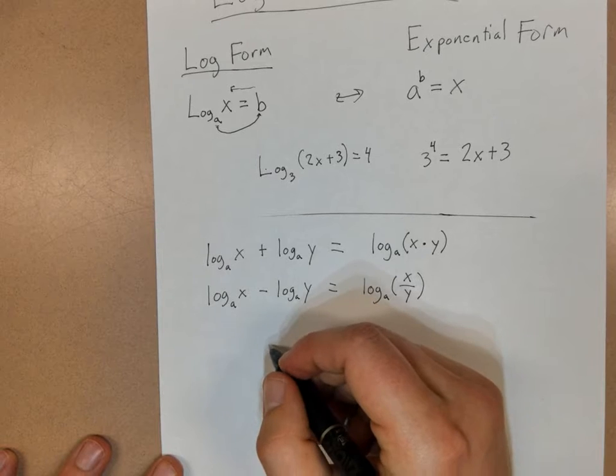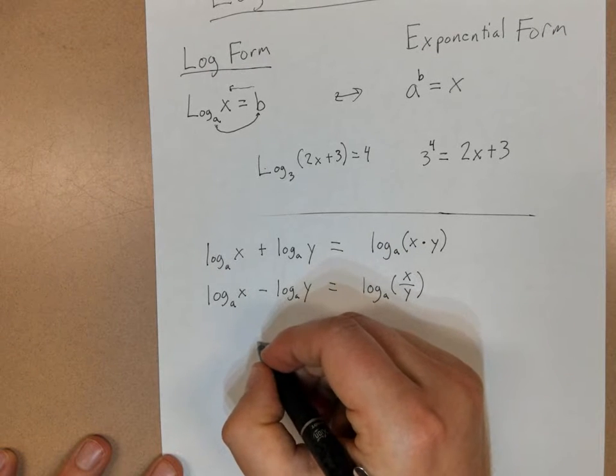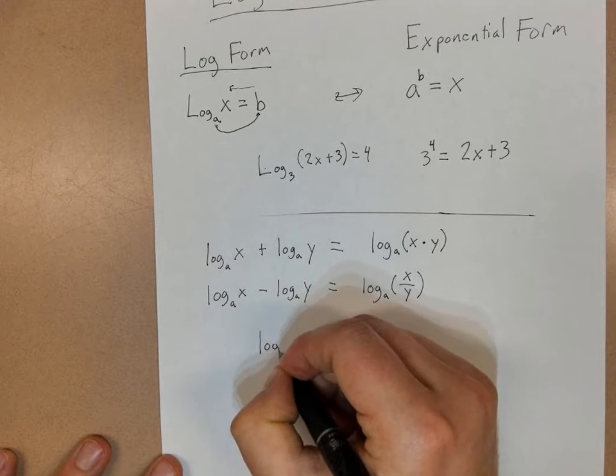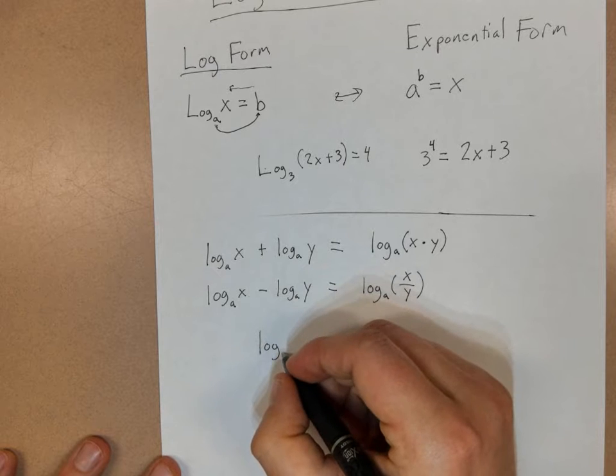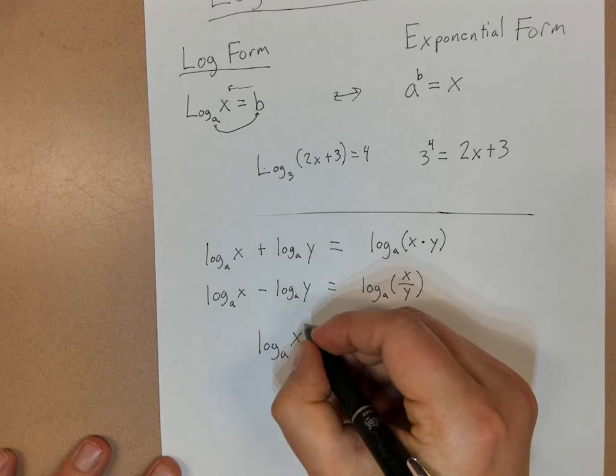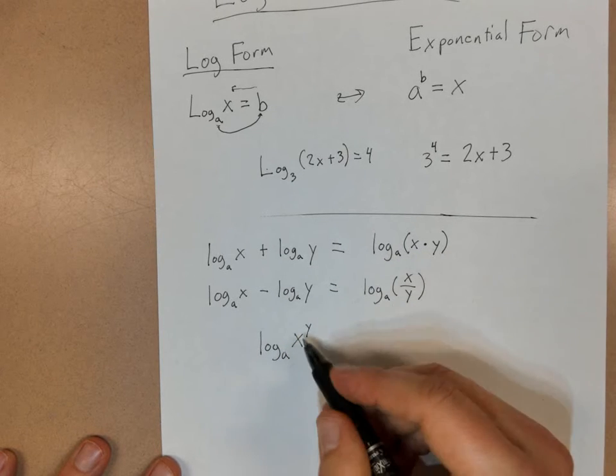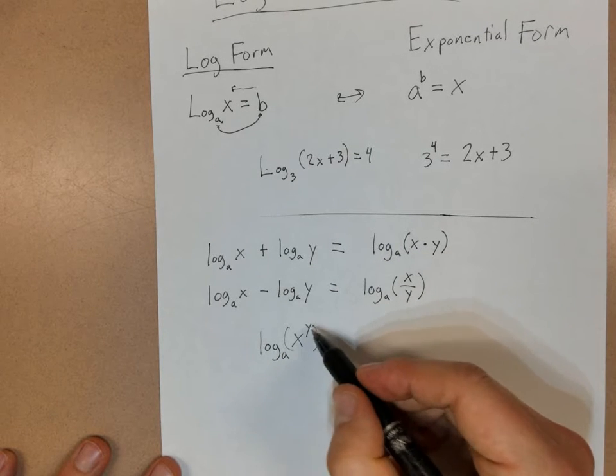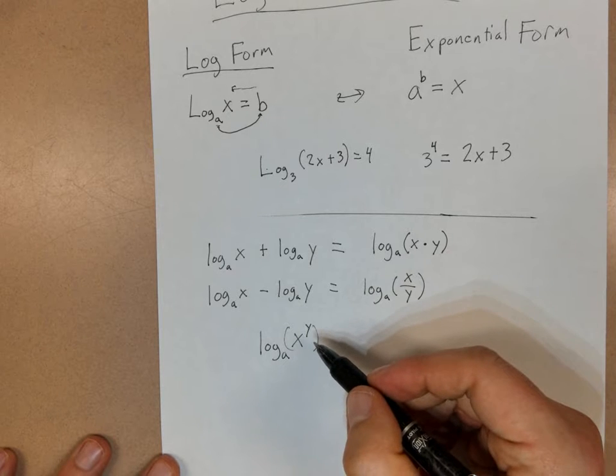One other log rule that exists would be, if I have the log, actually two more log rules we'll go through. Again, we'll use base A. I'm going to say x to the y power. So if there's an exponent in the thing you're taking a log of...